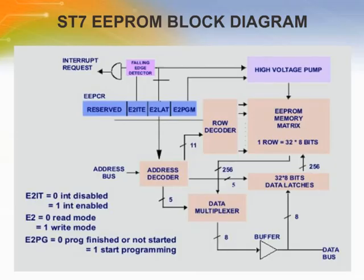The double EEPROM memory matrix is made of 8 rows, each row being 32 bytes. The cell is built around a 32-byte latch where bytes are copied using the 5 least significant bits of their address. The row is selected using the 11 most significant bits of the last write access, and the previously written bytes are loaded from the latch to the double EEPROM memory matrix. An interrupt can be generated at the end of the programming cycle depending on the value of the E2ITE bit of the control register. The two bits E2LAT and E2PGM set the operation of the double EEPROM cell.